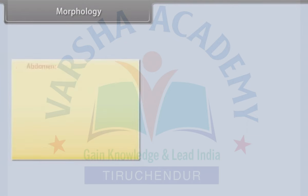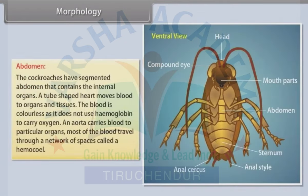Morphology - Abdomen: The cockroach has a segmented abdomen containing internal organs. A tube-shaped heart moves blood to organs and tissues. The blood is colorless as it does not use hemoglobin to carry oxygen. An aorta carries blood to particular organs, and most of the blood travels through a network of spaces called a haemocoel.